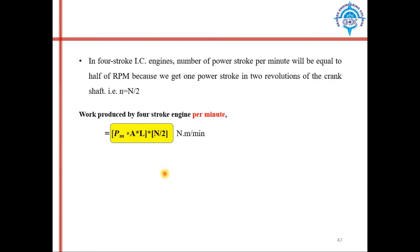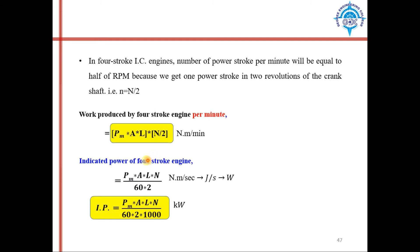In a four-stroke engine, the number of power strokes equals half the number of revolutions, because power is generated in alternate strokes. So for a four-stroke engine, number of power strokes is N/2. Therefore, indicated power of a four-stroke engine is equal to P·L·A·N divided by 2, divided by 60 to convert minutes to seconds.